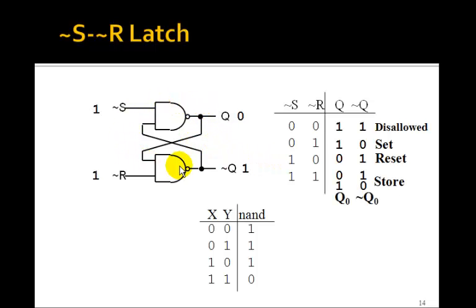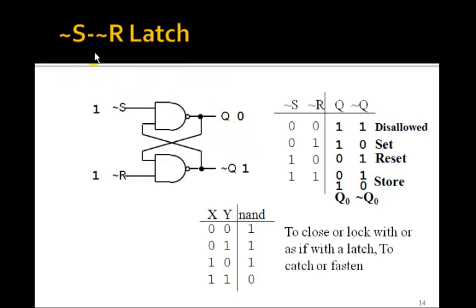So the upshot is that 1,1 is the store state. To set it, we bring NOT-S low, and if we bring it back high, it stays set. To reset it, we bring NOT-R low, bring it back high, and it stays reset. We call this a NOT-S NOT-R latch. The definition of a latch is to close or lock — to catch or fasten. We latch a 0 in here by bringing NOT-R low and back high, and we latch a 1 in here by bringing NOT-S low and back high.